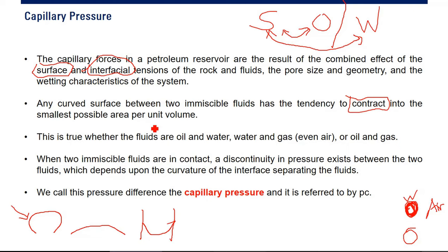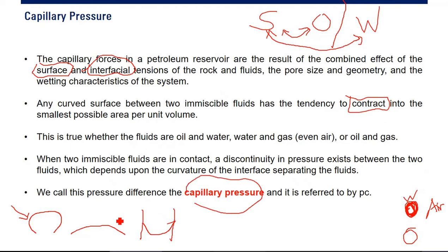This is true whether the fluids are oil and water, water and gas, or oil and gas. When two immiscible fluids are in contact, a discontinuity in pressure exists between the two fluids, which depends upon the curvature of the interface separating the fluids. We call this pressure difference the capillary pressure, referred to as PC.